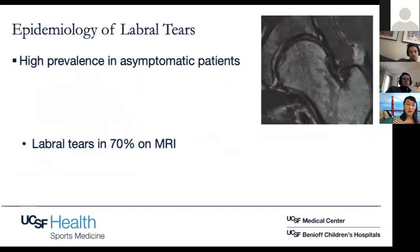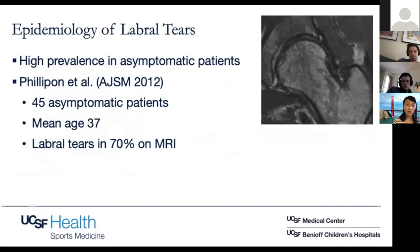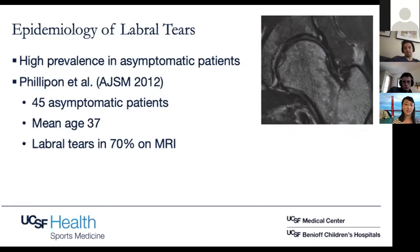Labral tears are also highly prevalent in asymptomatic patients. A study by Philippon in 2012 looked at 45 asymptomatic patients with a mean age of 37, and labral tears were present in 70% of patients. One of my mentors in fellowship used to say: not every labral tear needs surgery. I quote that to patients because patients will get hung up on labral tears, just like they get hung up on meniscus tears or labral tears in the shoulder — the connotation being something is torn, therefore it needs to be fixed. I quote this study to say that even asymptomatic patients may have labral tears, and I really want to correlate their clinical picture with their imaging findings.